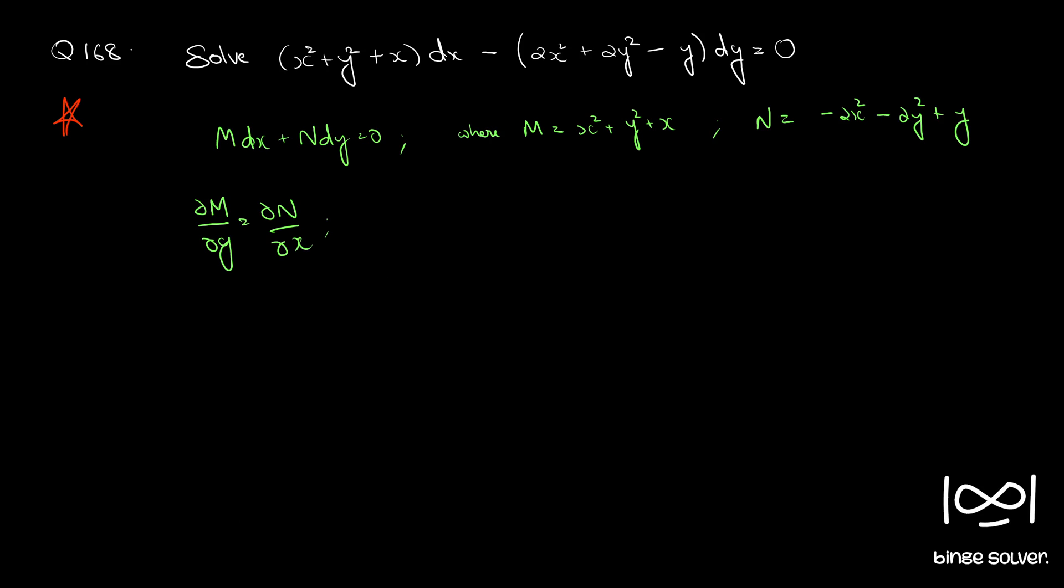So our equation becomes 1 plus x by x square plus y square dx. And let's take minus sign inside. So that becomes y by x square plus y square minus 2, dy equal to 0.